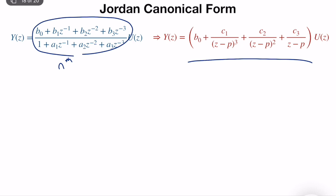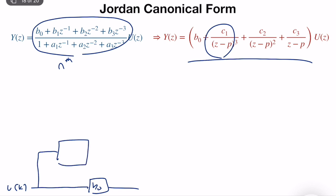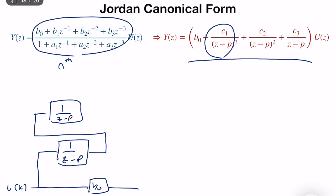We come up with a block diagram realization that should be minimal. Since it's a third-order system, if we separate the blocks individually — z minus p as one block, (z minus p) squared as another, and so on — we would have 6 elements, making it a 6th-order realization, which is not minimal. So instead, we use a trick: starting from u(k), we have b0 for the direct connection, and then 1 over z minus p.